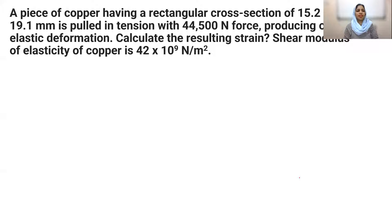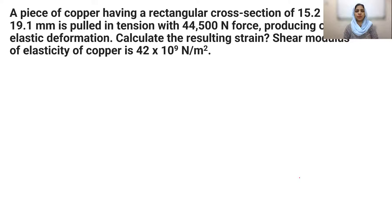A piece of copper having a rectangular cross section of 15.2 mm by 19.1 mm is pulled in tension with 44,500 Newton force, producing only elastic deformation. Calculate the resulting strain. The shear modulus of elasticity of copper is given as 42 × 10⁹ Newton per meter square.